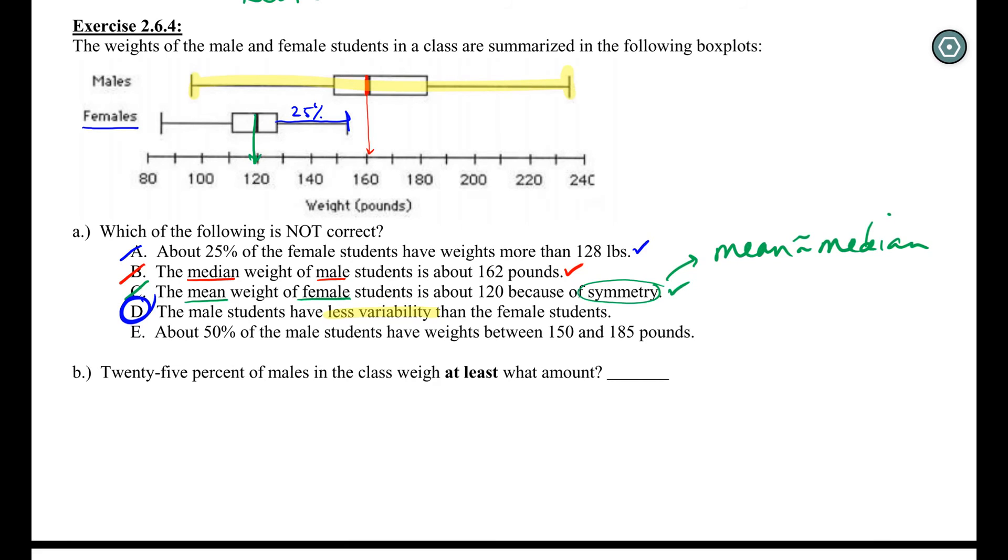We'll look at E. E says 50% of the students have weights between 150 and 180 for the males. So the males, we're talking about being between 150 and 180. Yes, that's about 50% of the data. That's in our quartile range. This is that 25% above the median and 25% below the median that's in the box. So same as answer choice A, just asking us, do we understand that each section of this is 25% of our data?